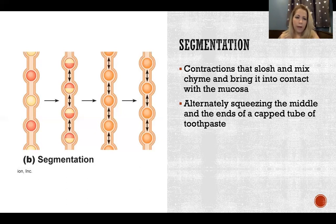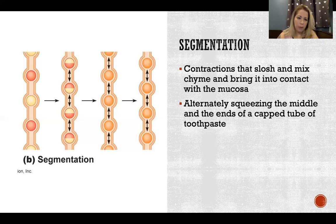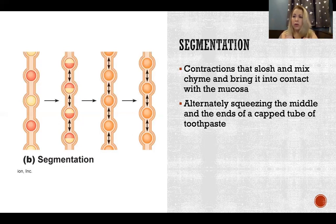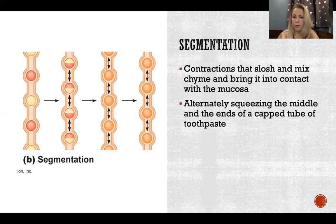All the way on the left, you can see how we're alternating between red and yellow, just to illustrate how we're mixing. We have red and yellow, and then we're squeezing and mixing — squeezing back and forth, like the tube of toothpaste, middle then ends. We're staying in one location and squeezing to mix up very thoroughly the contents in that location.